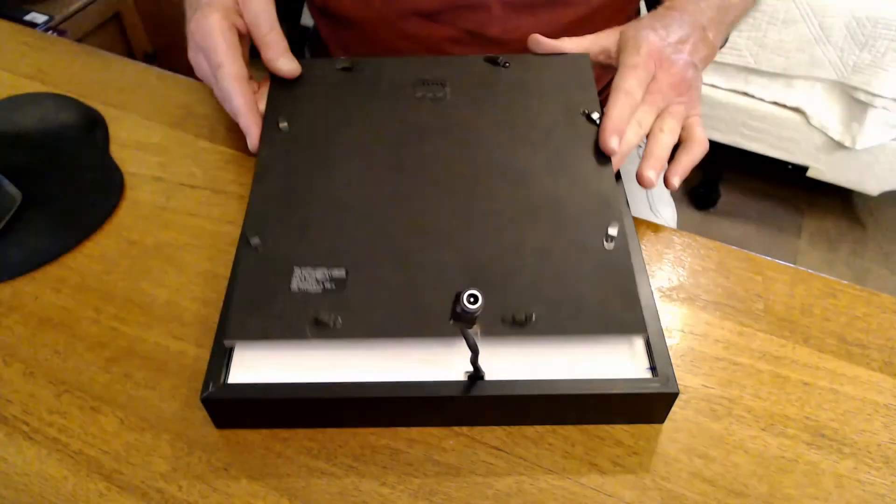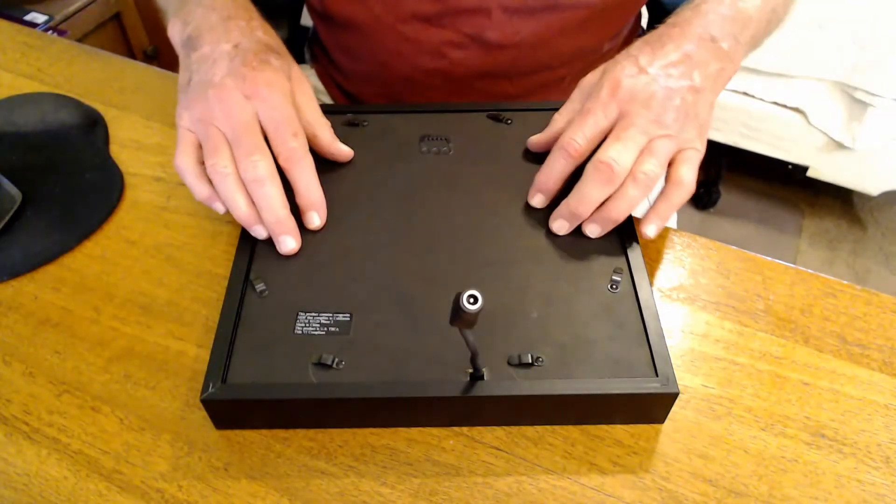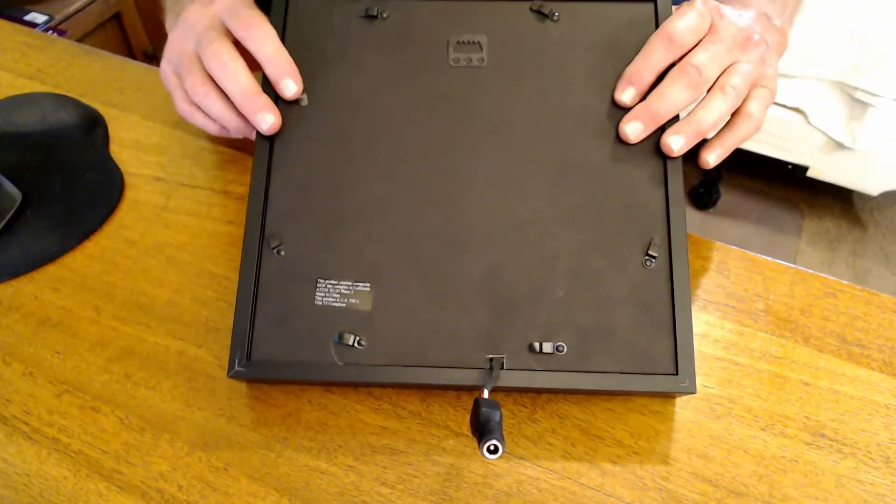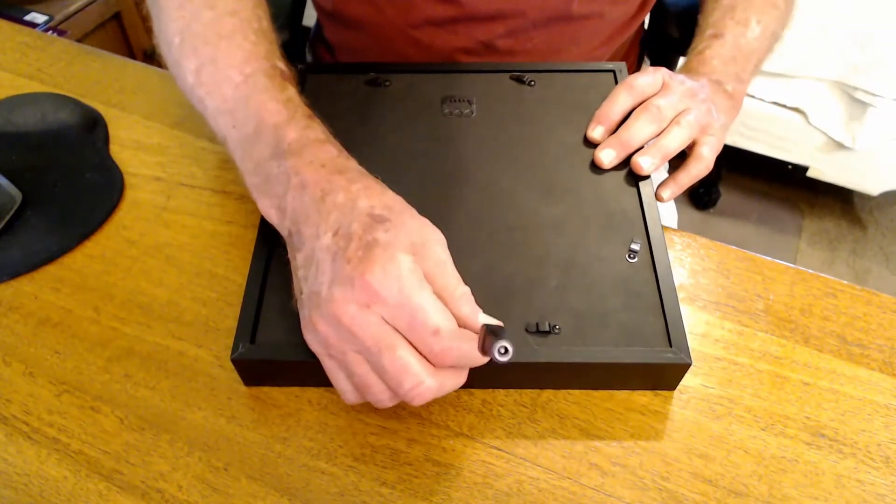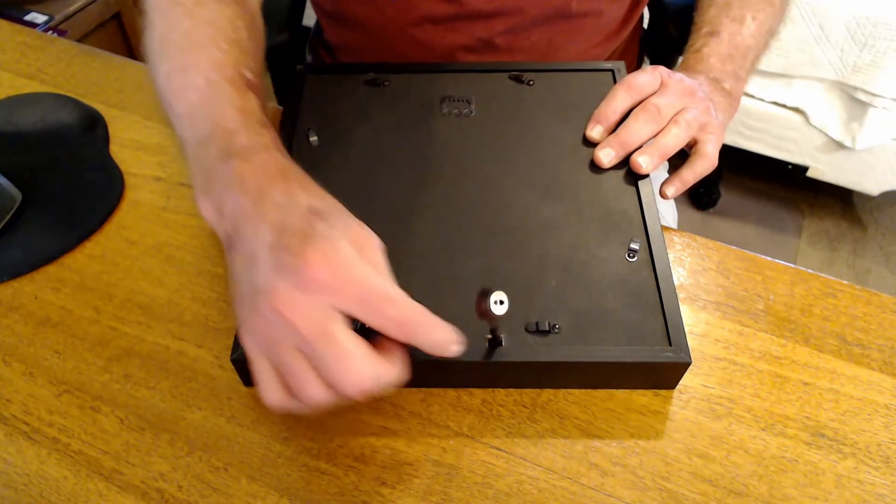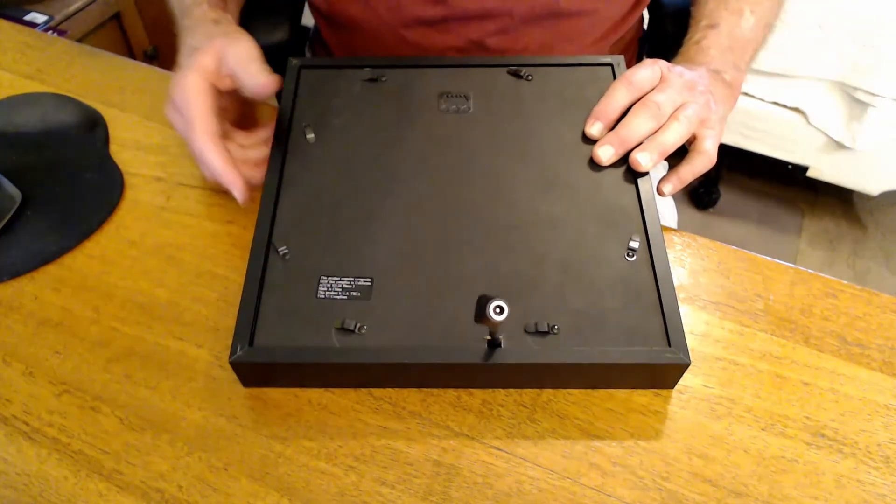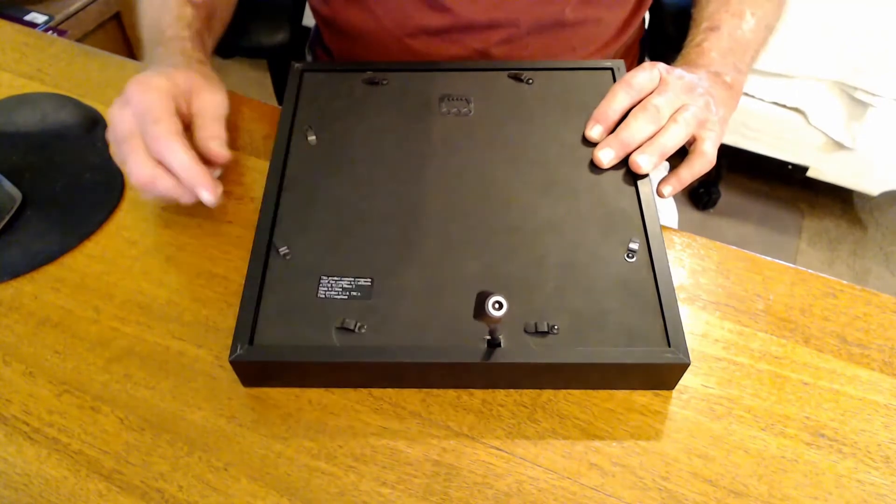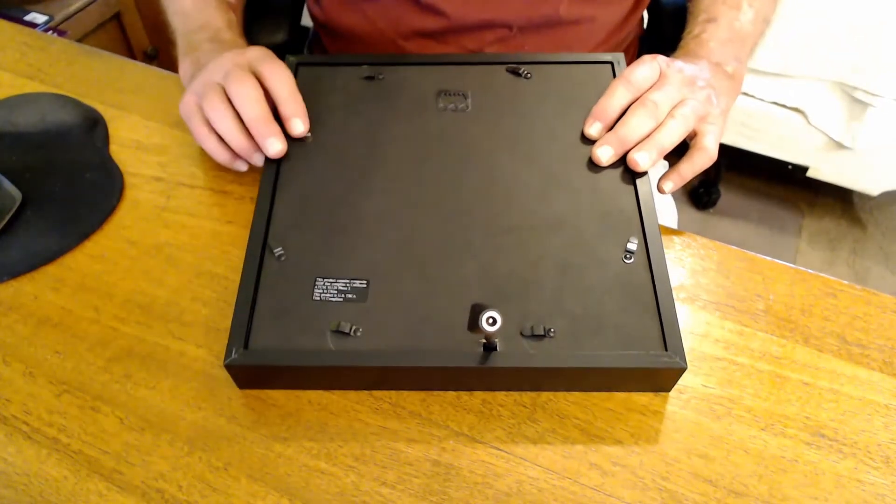And then the thing that holds everything together, the back piece, goes in. And everything works very nicely. You know, what I'll do is I'll bend this over. I'll cut a groove right here so the wire can bend down and have a nice easy exit from the frame.